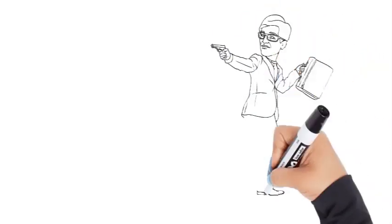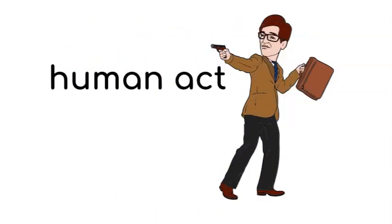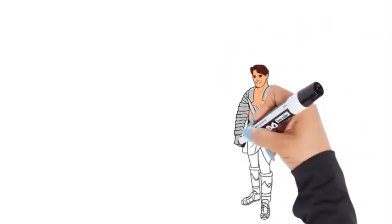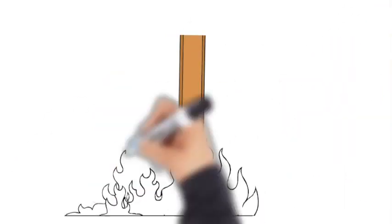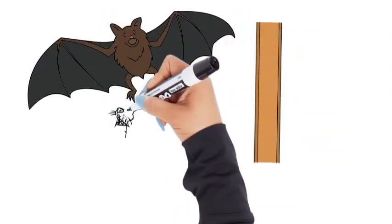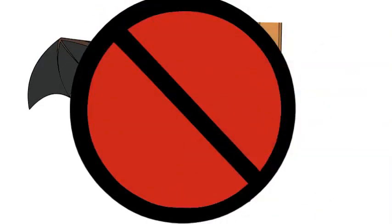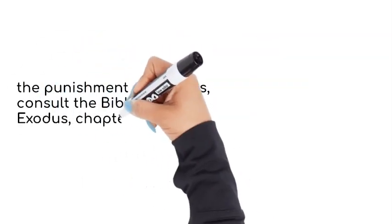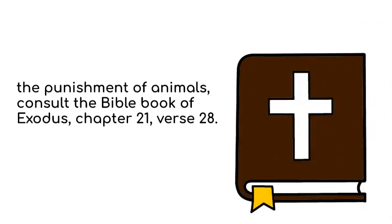The act must be a human act, which means that the perpetrator must be a human being. Animals and even inanimate objects, such as beams that fell on people's heads, were sometimes tried and punished in ancient cultures and during the Middle Ages, but this cannot happen today in South African or any other modern legal system. For an example of animal punishment, see Exodus chapter 21, verse 28 in the Bible.